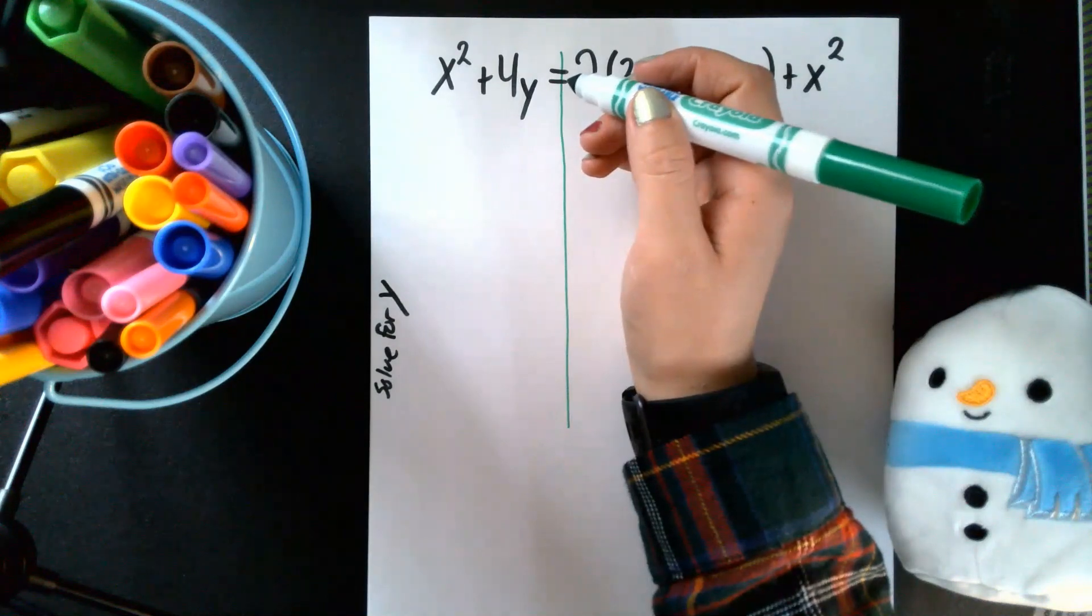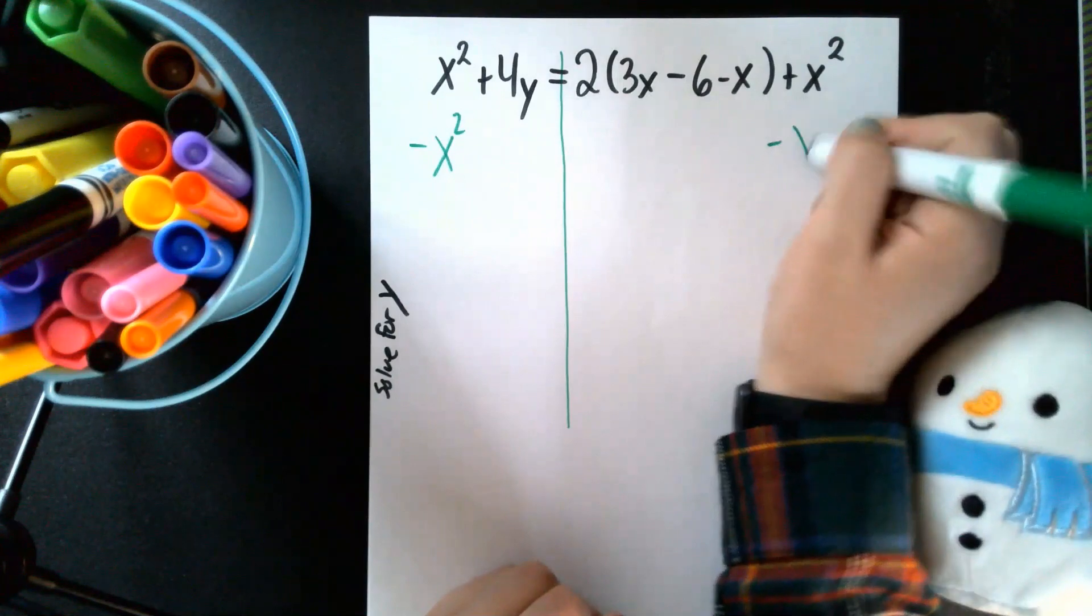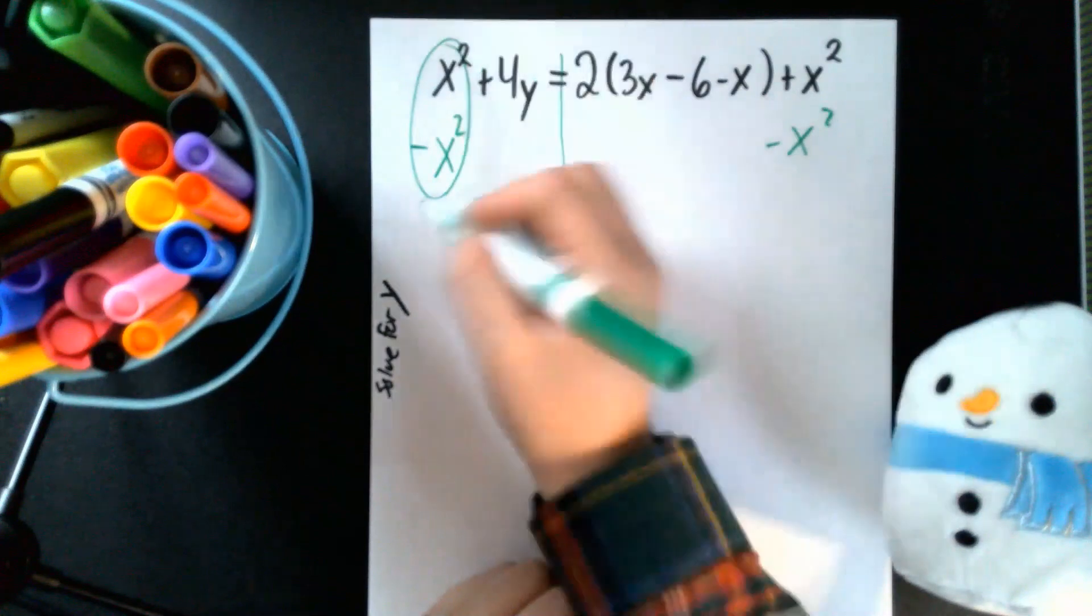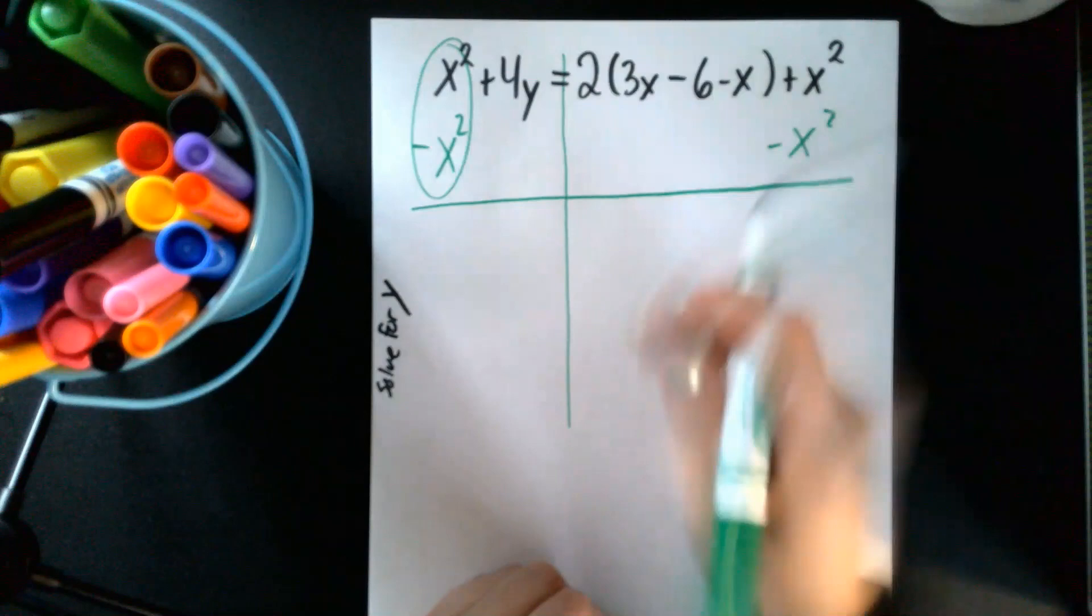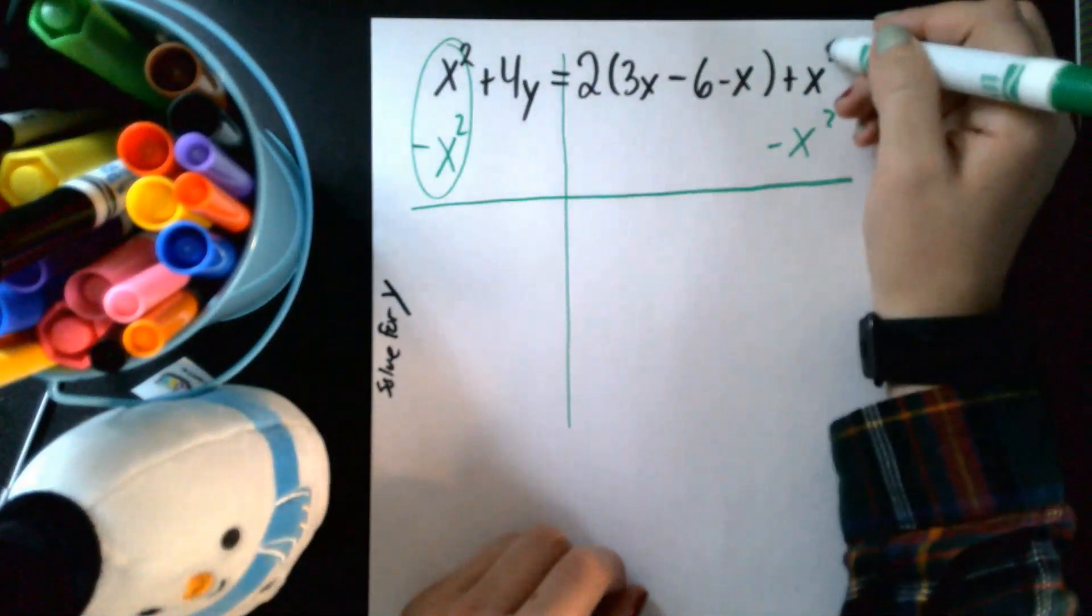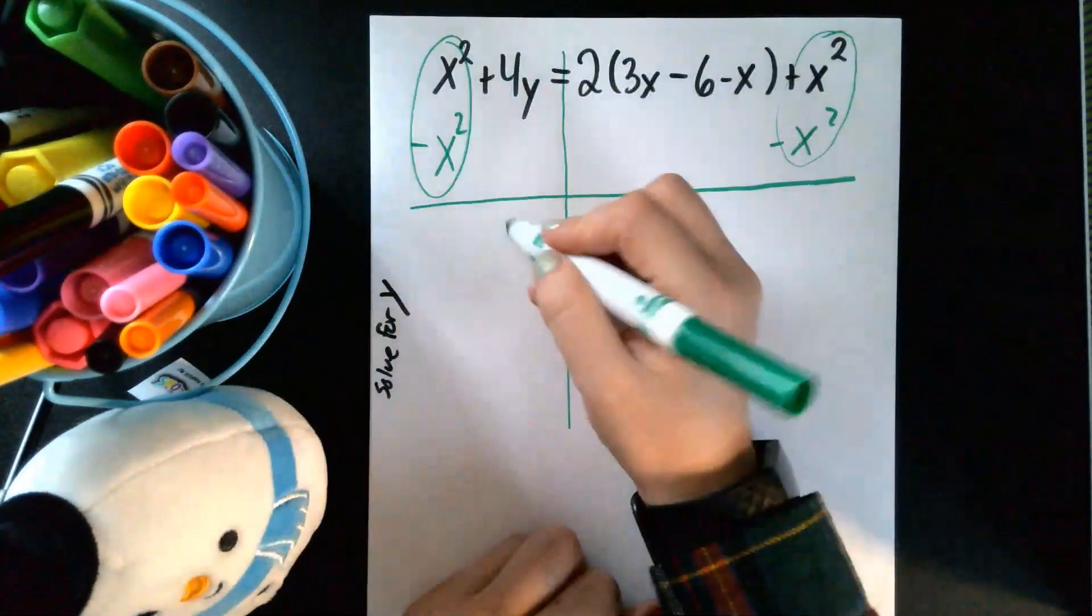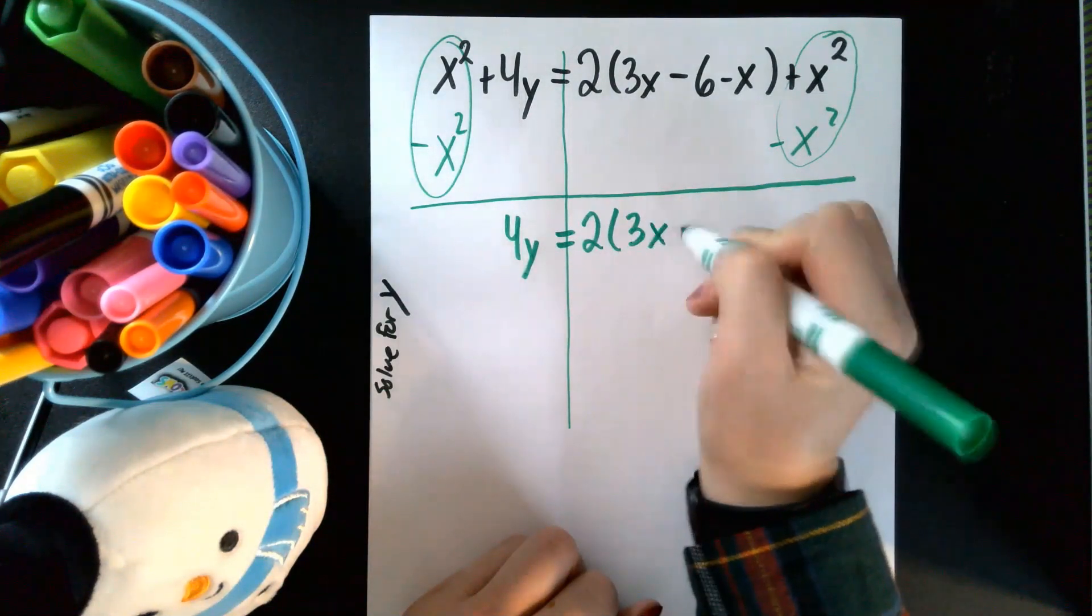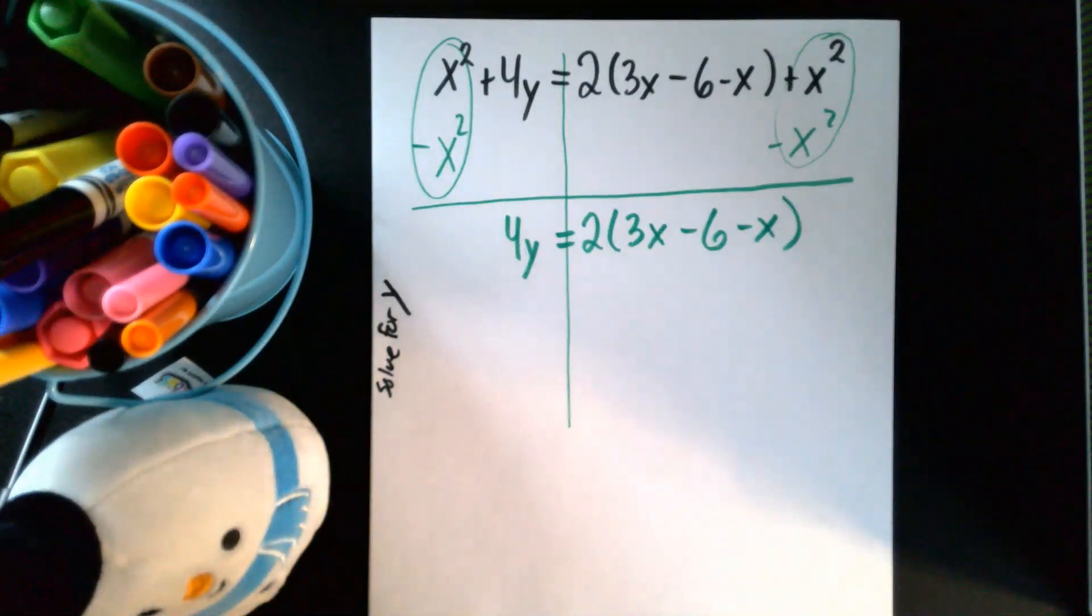Then we're gonna subtract x squared from both sides because I want to get this guy all by themselves and this is the only thing that's bothering them. So that's a zero. Seth, you are in the way, I'm sorry, you're cute and fluffy. And the cool part about this problem is that this also goes away, which means that I'm only left with this part. So exponents gone, automatically, very much nicer problem. Wouldn't say very nice problem but much nicer problems.